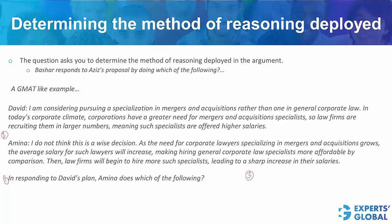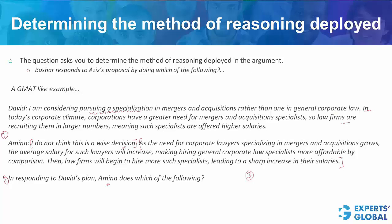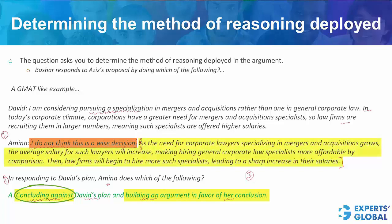The first person talks about why he is considering pursuing a different specialization, and then he talks about the reasons. The second person starts by disagreeing with the first person — this is the conclusion of the second person — and then the second person gives reasons for her claim. So, how is the second person responding? By disagreeing with the first person and giving reasons for her claim. The correct answer choice says 'concluding against' David's plan and building an argument in favor of her conclusion — that pursuing such a specialization is not a wise decision. This answer choice makes sense and is the correct answer choice.